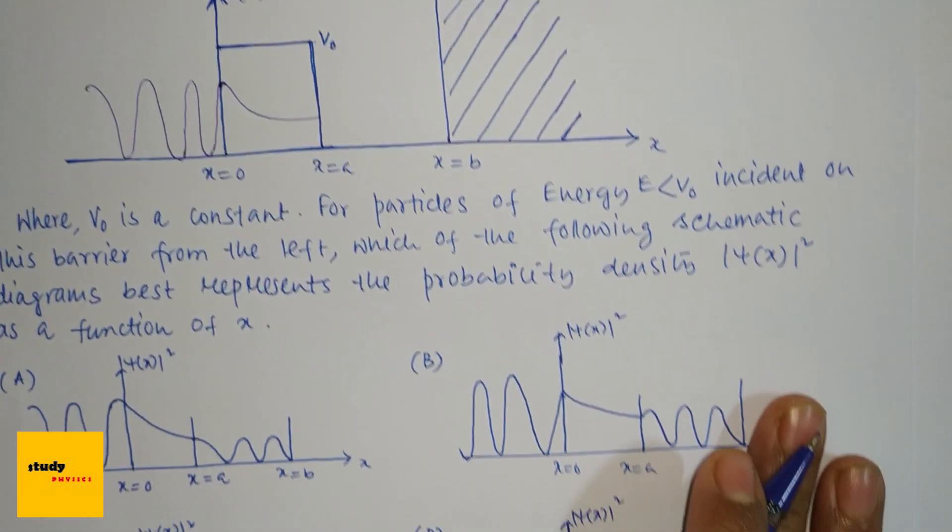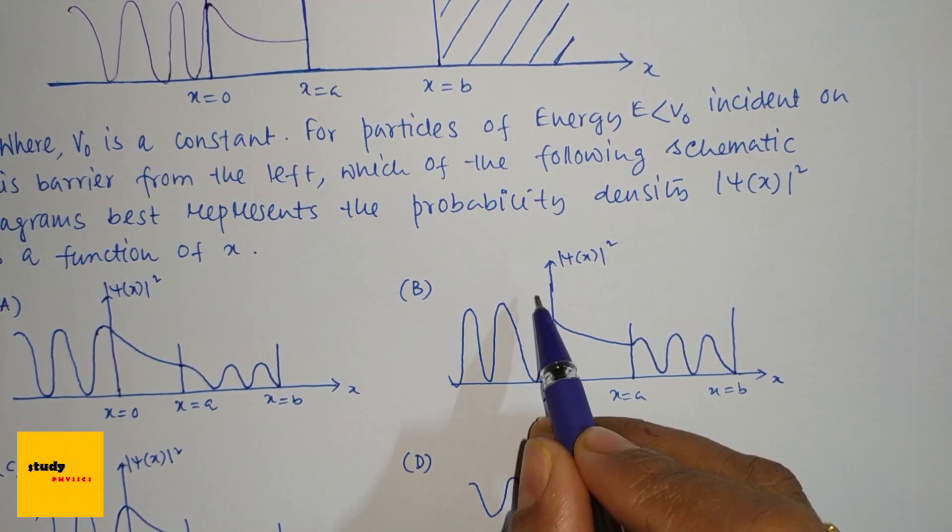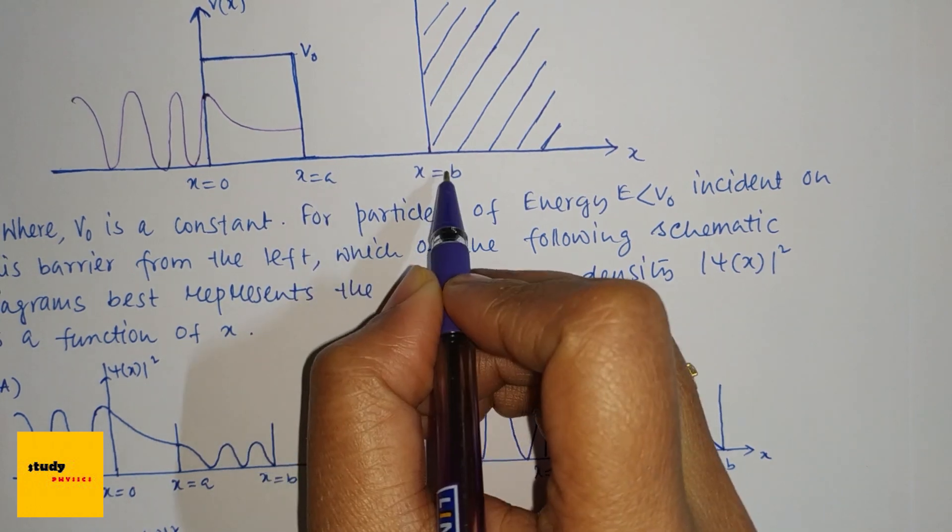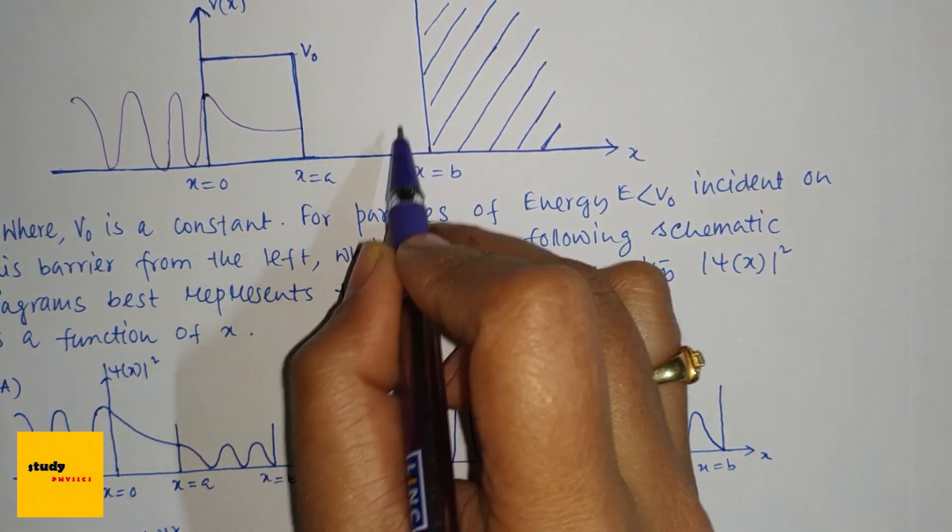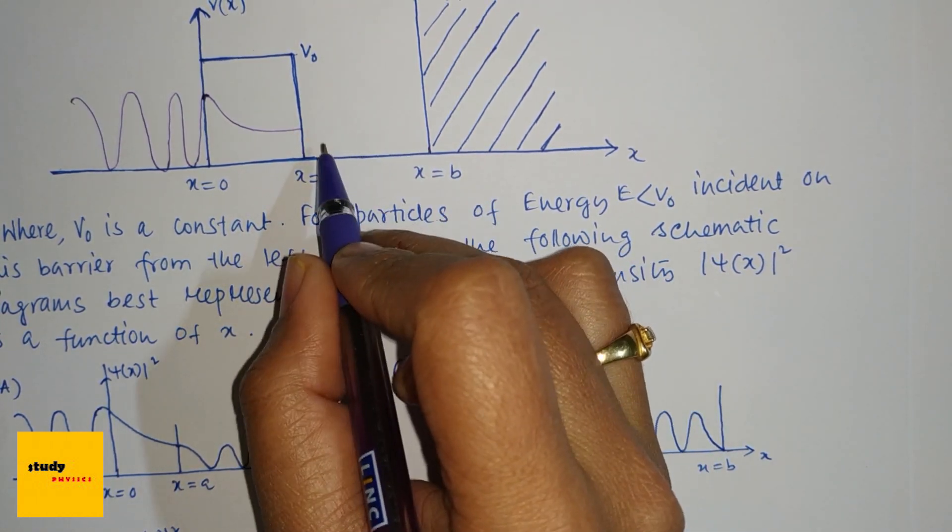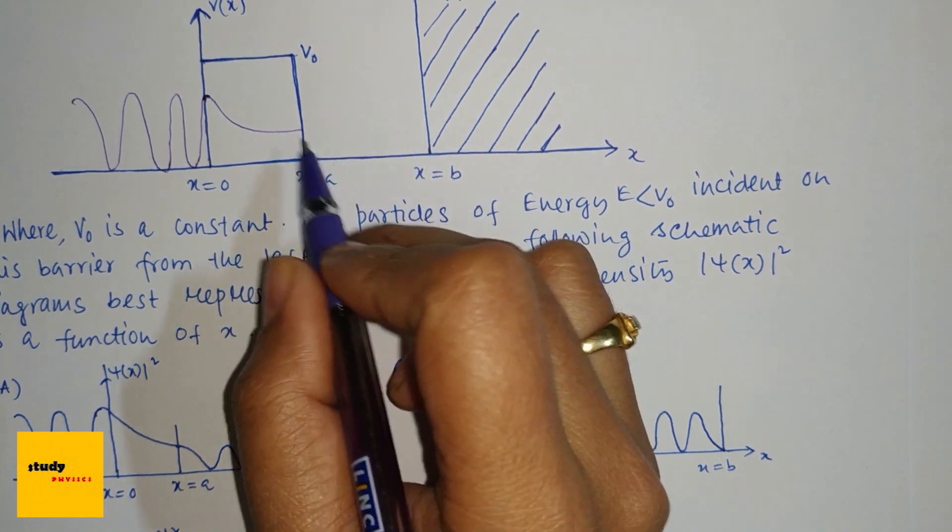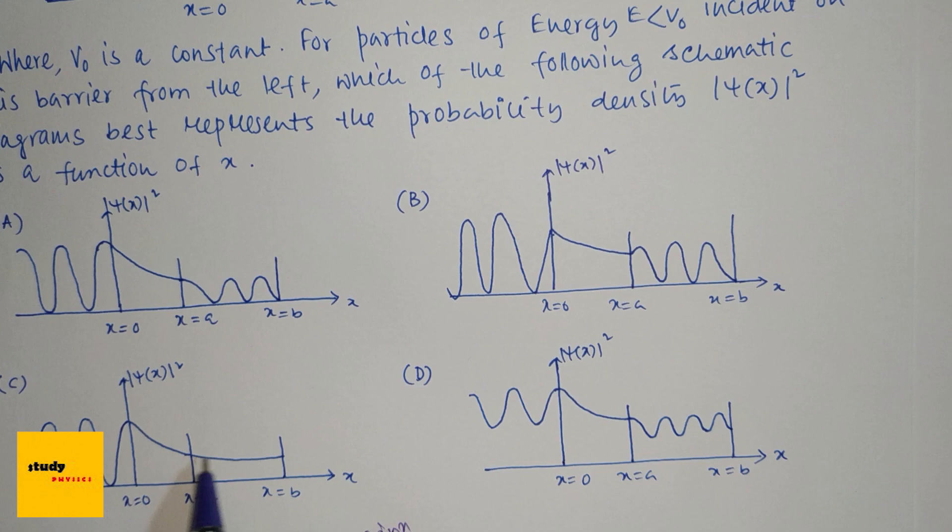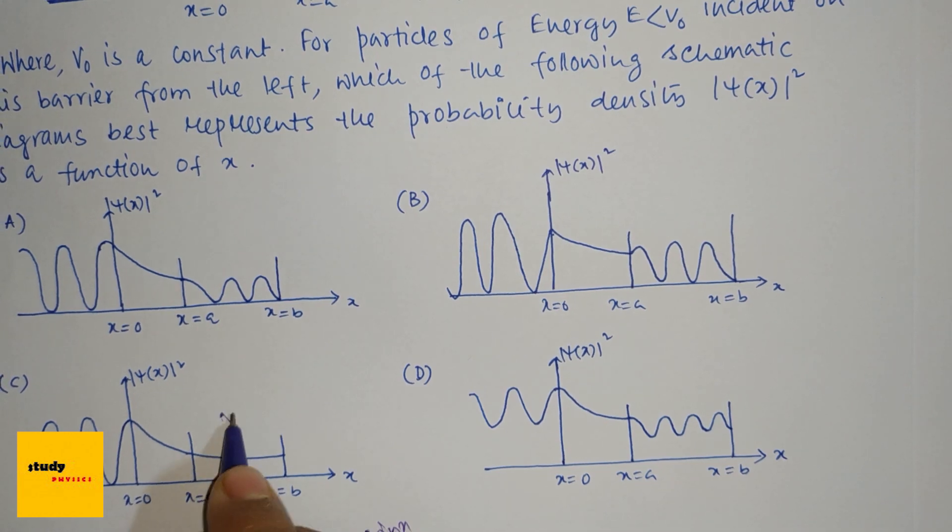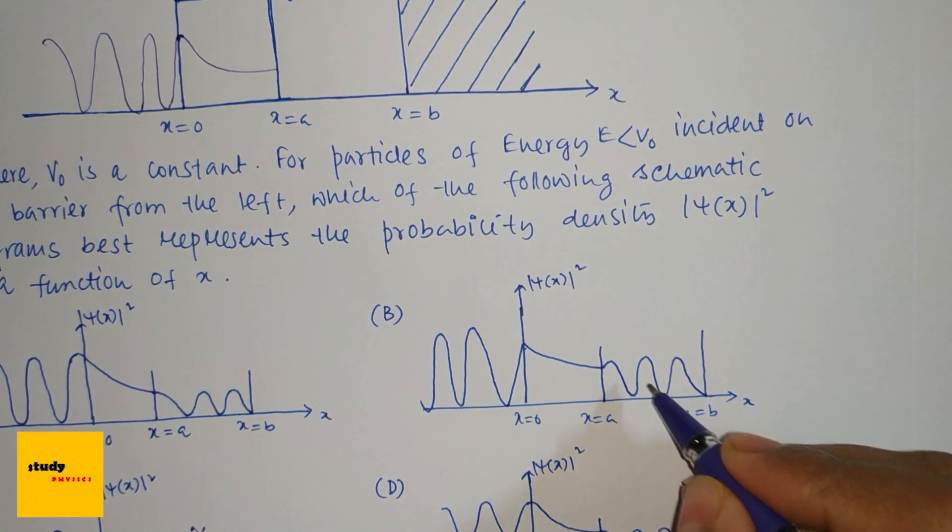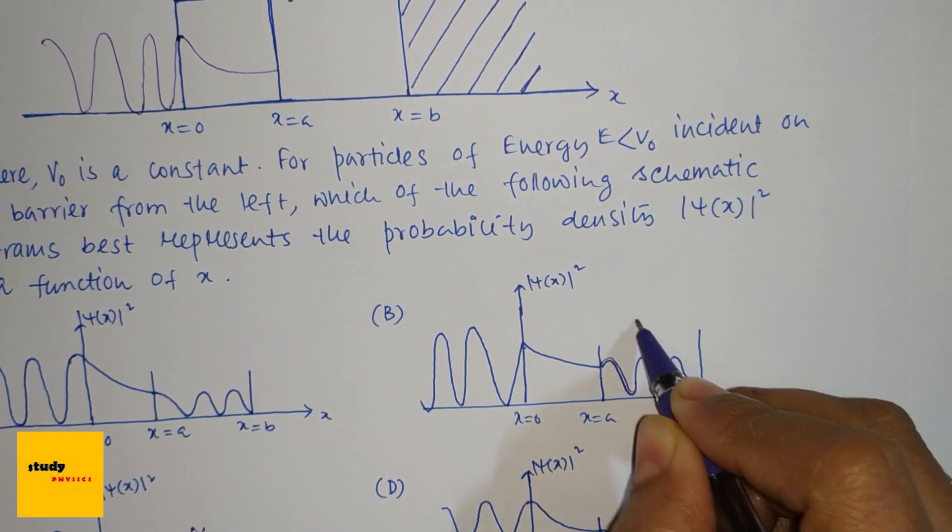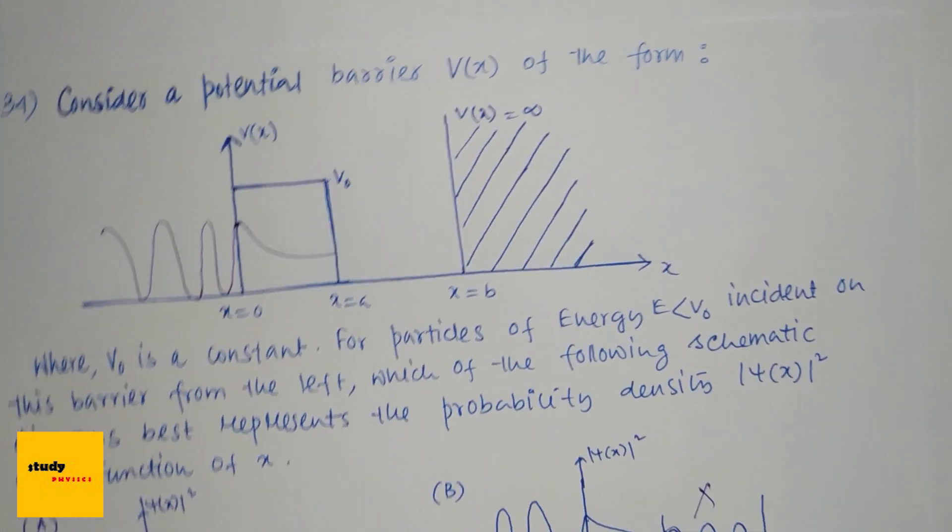And from now you can easily discard these two options B and C, because from x equal to a to x equal to b, here is another free space. So here also your particle oscillates, but here this is totally constant, which is not correct. And here the probability density is increasing like this, which is not possible also.